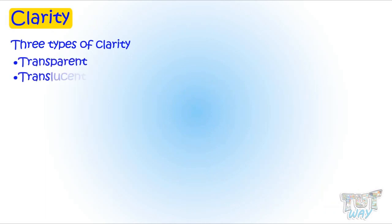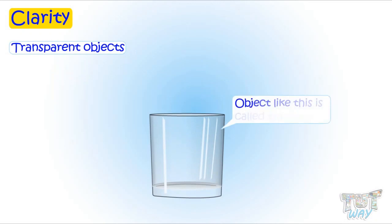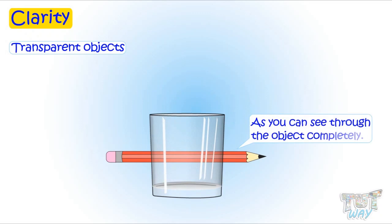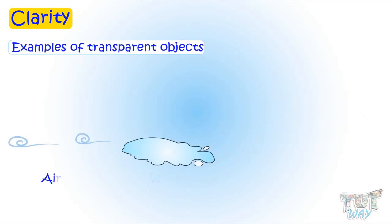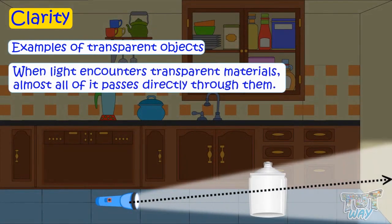Now let's learn another property. It is clarity. Clarity can be of three types: transparent, translucent, or opaque. Let's first learn about transparency. An object like this is called transparent, as you can see through the object completely. Materials like air, water, and clear glass are called transparent. When light encounters transparent materials, almost all of it passes directly through them.